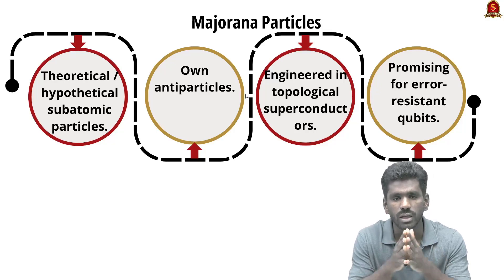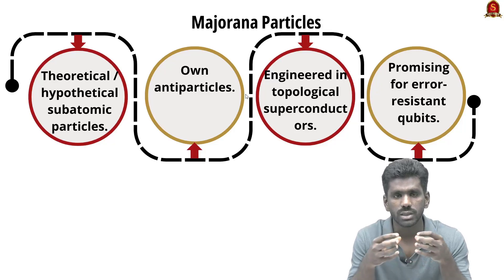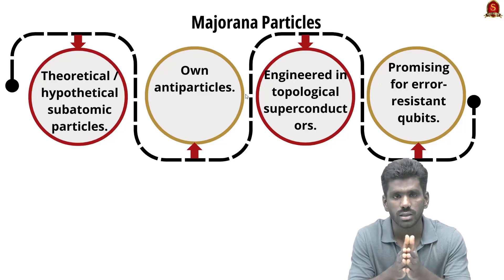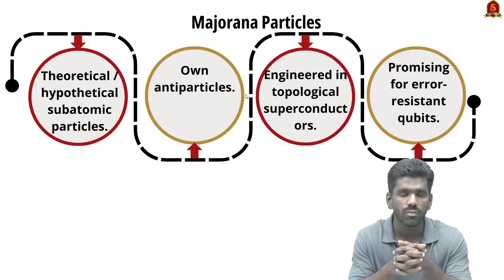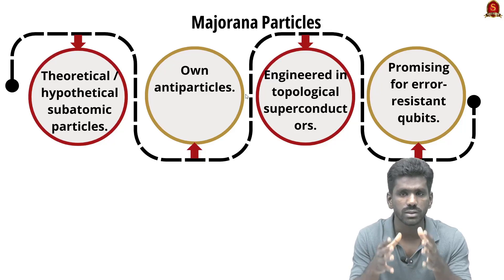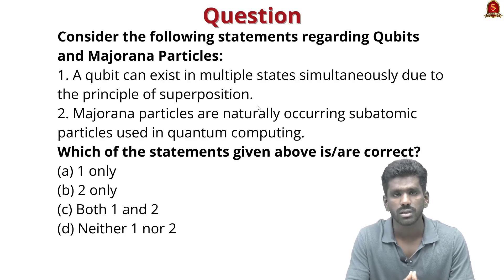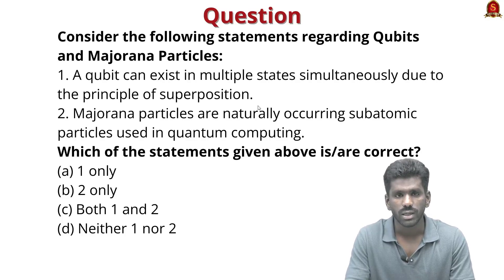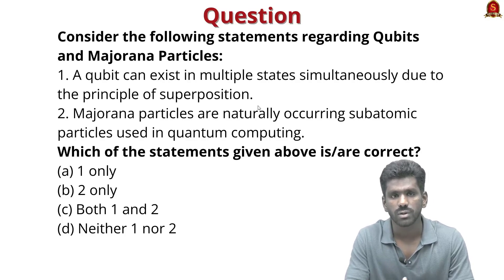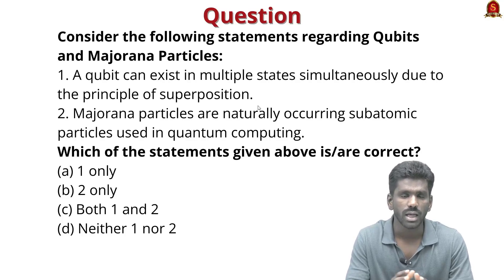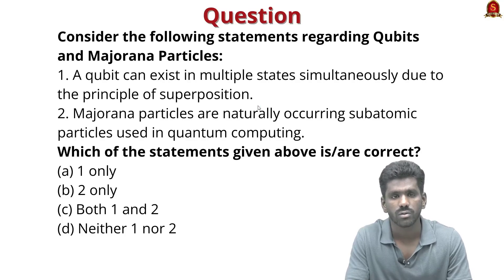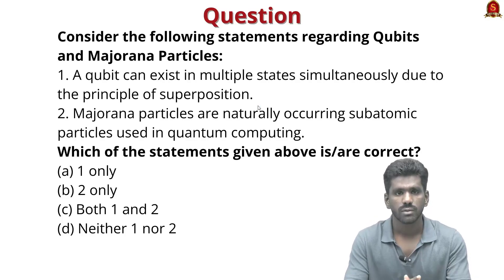One of the important challenges in quantum computing is that qubits can create many errors. Producing very low-error qubits is a critical task, and Majorana particles can help produce lower-error qubits, advancing quantum computing further. Practice question: Consider the following statements — a qubit can exist in multiple states simultaneously due to superposition (correct); Majorana particles are naturally occurring (incorrect, they are produced in laboratory). The correct answer is option A, statement one only.